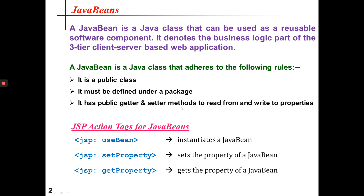There are three types of JSP action tags for dealing with JavaBeans. Number one: jsp:useBean, which is used for instantiating a JavaBean. Next is jsp:setProperty, which is used to set the property of a JavaBean. Thirdly, we have jsp:getProperty, which is used to get the property of a JavaBean. We'll see how to use these tags to deal with JavaBeans using JSP.